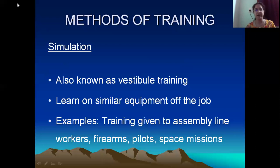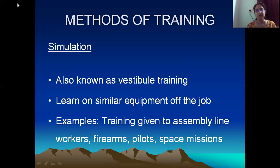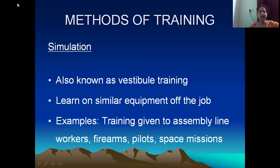Another example is the case of firearms. In police training or army training, when practicing targeting or shooting, you obviously cannot take a person to the enemy's frontier and point out an enemy soldier to shoot — there is a risk of loss of life. So in such situations, for practice of firearms, a certain target is given in any form. That particular target — the bullseye — is what they are supposed to shoot. This is also a kind of simple simulation exercise.